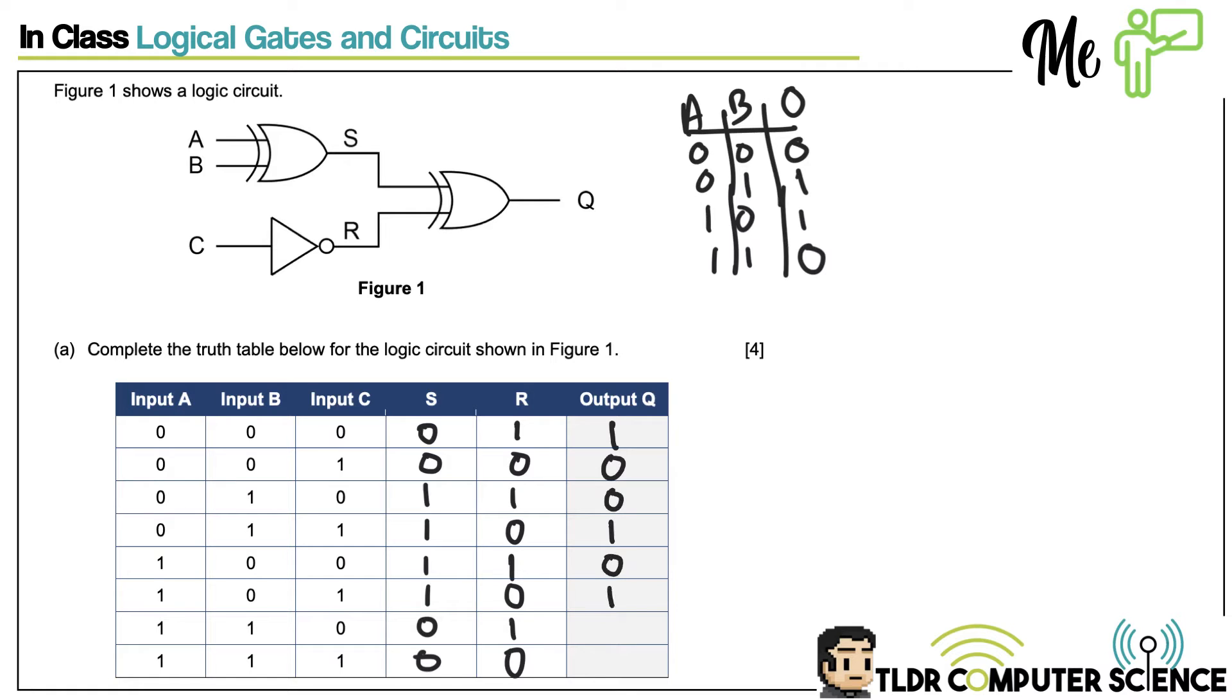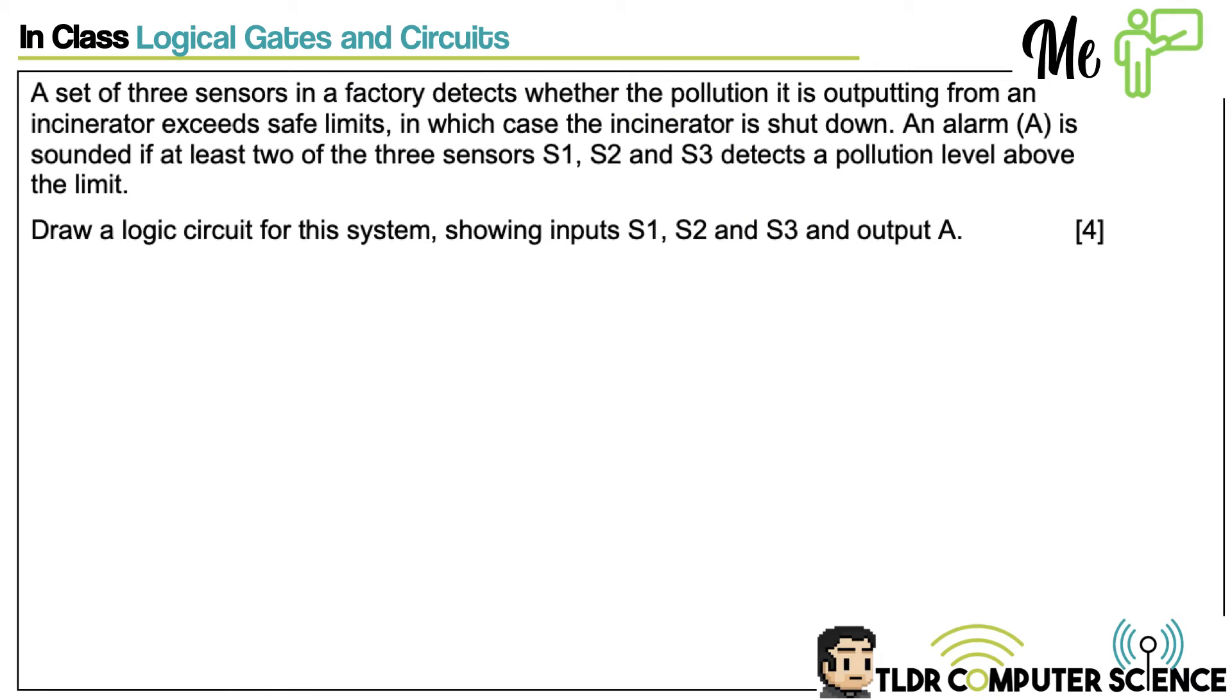This is clearly the most challenging of the questions, especially in real time, and you could definitely get a question like this where it's going to ask you to process it. Let's explore how we might want to do it. Let's talk about how we're going to approach a question like this. I think first of all, it's sensible to think about the inputs S1, S2, and S3. So do you know what I'm going to do just to start us off? I'm literally just going to plug S1, S2, and S3 as my separate inputs.